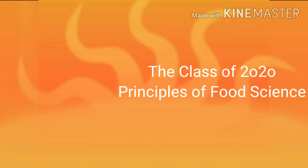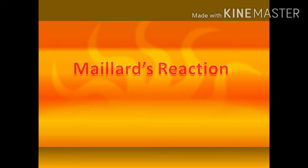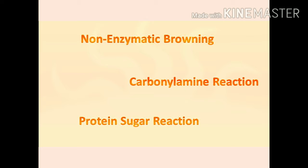This is one of the most important reactions in food science and it belongs to browning of food. There are two types of browning: enzymatic browning and non-enzymatic browning. Maillard's reaction belongs to non-enzymatic browning, where the browning is due to heat. Carbonyl-amine reaction and protein-sugar reaction are other names for Maillard's reaction.